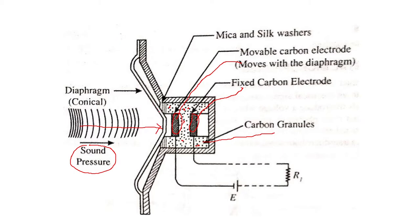The diaphragm is connected to the movable electrode with the help of mica and silk washers. When the sound wave is incident on the diaphragm and strikes it, there is a mechanical movement of the diaphragm. This diaphragm is going to move, and that movement will move this electrode also. This electrode will move the position of the granules inside — the granules can be pressed or unpressed because of this movement.